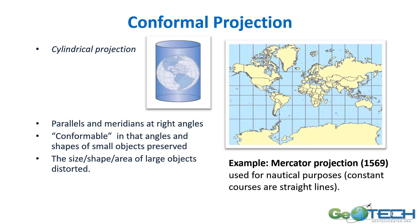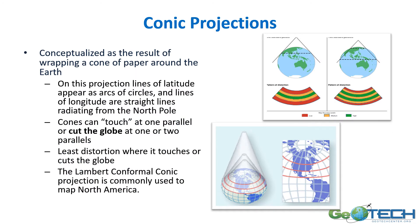Conformable projections — here's a cylindrical projection, using a cylinder to project the features. You'll note that the parallels and meridians all meet at right angles. It's conformable in that the angles and shapes of small objects are preserved, but the size, shape, and area of larger objects are distorted. This is a Mercator projection.